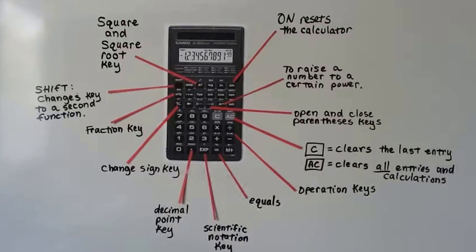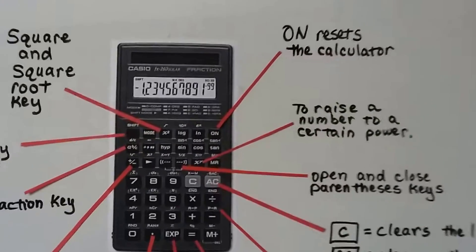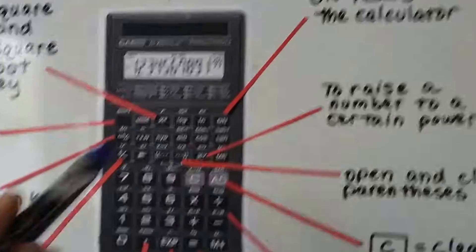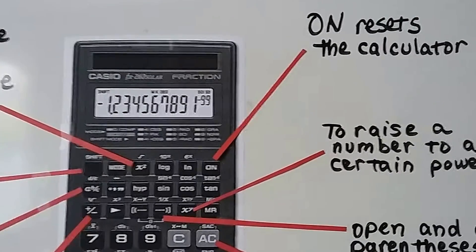So here I've got the calculator labeled with all its parts. So let's start up here. We'll go around like a clock. Right here we can see the on button, see the on key, and it resets the calculator.